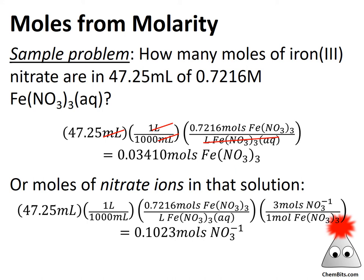We can do the same thing for the nitrate ion part of iron nitrate all by itself. We take the moles of iron nitrate we just calculated and apply the mole ratio: three moles of nitrate ion per one mole of iron nitrate. So the number of moles of nitrate ions in this solution is three times the moles of iron nitrate formula units. Canceling the units confirms it all works out as expected. That's a couple of quick examples of how we can use concentration and volume to get to moles, or to get to molarity, depending on the problem.